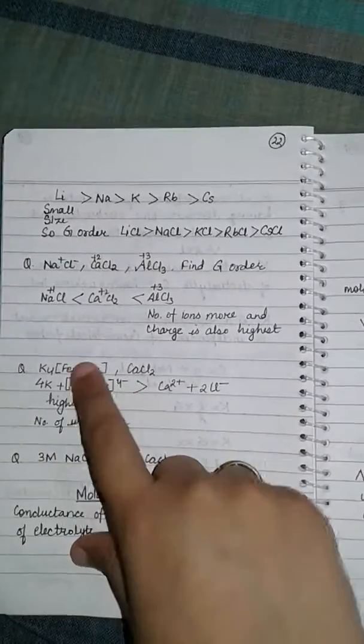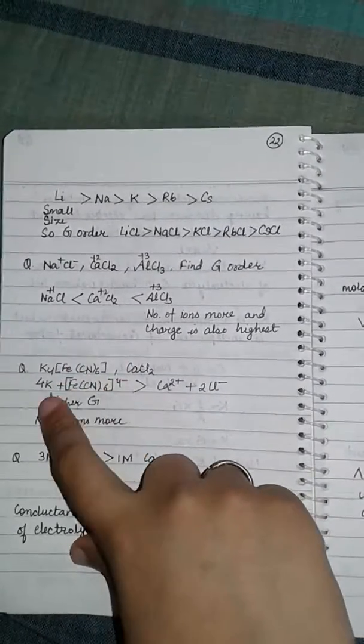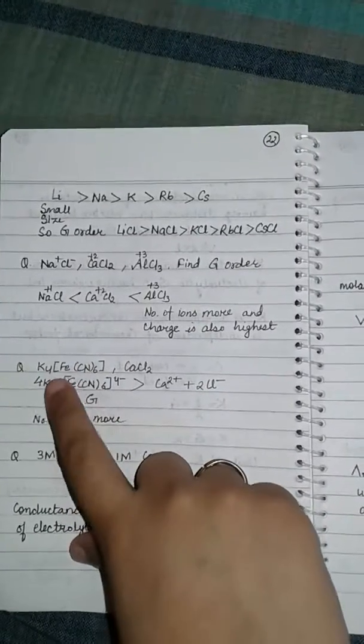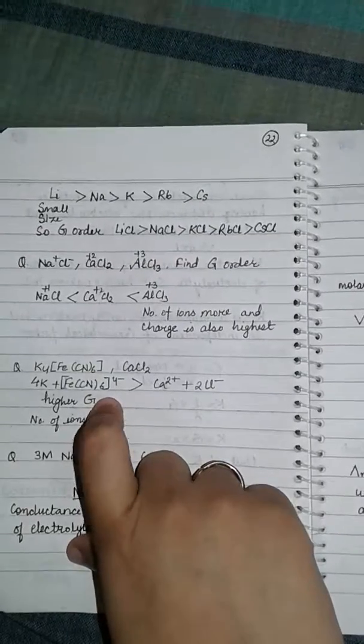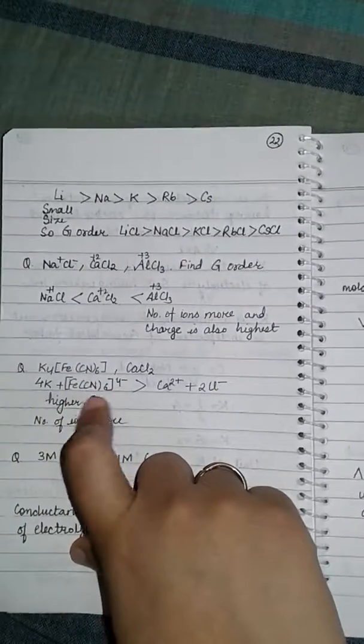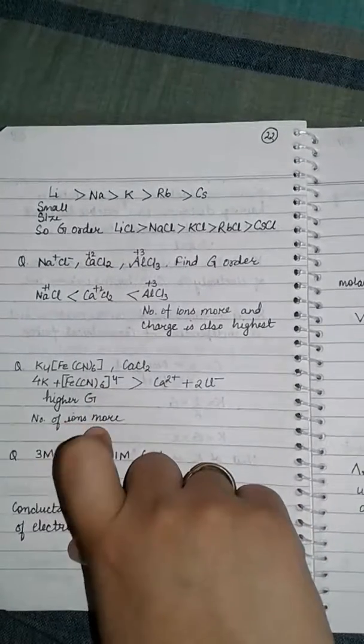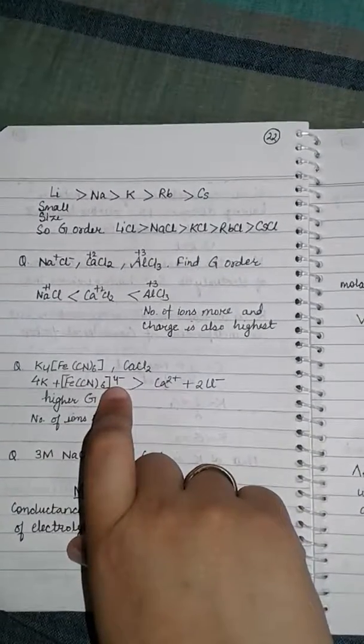For this molecule, conductance is higher because it contains more number of ions. If it is present in molten state, potassium plus and Fe(CN)6 four negative. Also, the charge on this is higher, that is four negative, and it has two positive charges, so it has greater value.